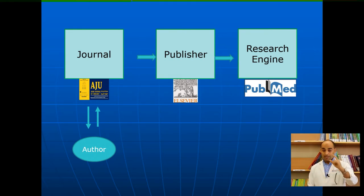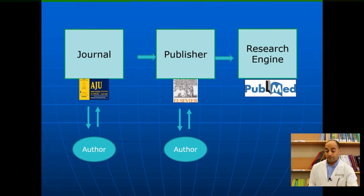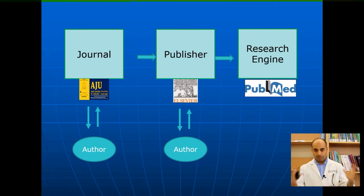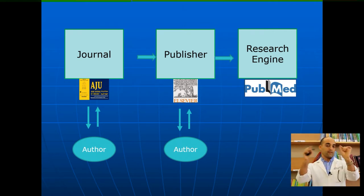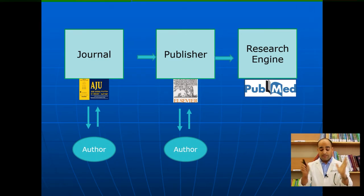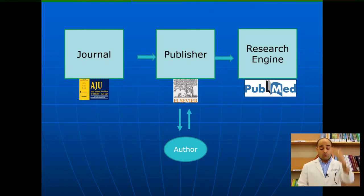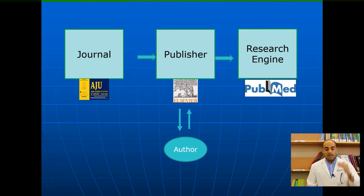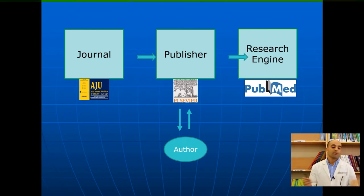Once the article is accepted, the journal informs the publisher, and then the communication line between publisher and author opens. The publisher verifies publication details with you — arrangement of figures and tables, author names, and affiliations. You also need to proof the galley proof. After publishing, the article is indexed on the research engine.